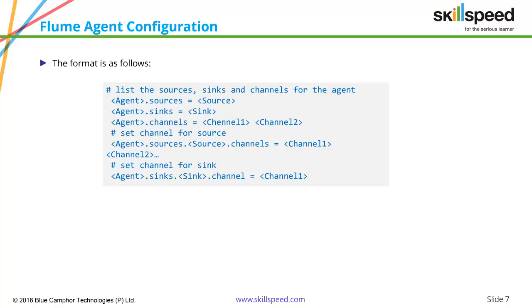Then agent.sources equals the source name, defining a name for the source. Similarly, we define a name for the sink, and two channels — channel1 and channel2. Under the channel setting for source, you write source.channels equals channel1. For the sink channel, you write sink.channel equals channel1. This is how you connect the source and sink to the same channel, following a hierarchical pattern: for this agent, this source's channel is channel1, and this sink's channel is also channel1 — so both are bound by the same channel.